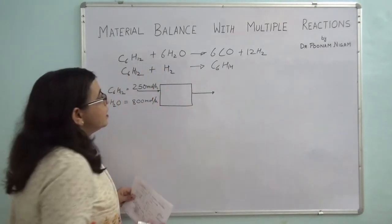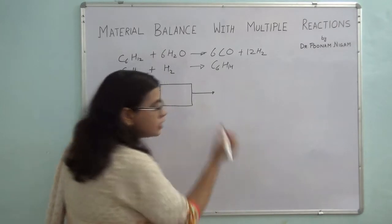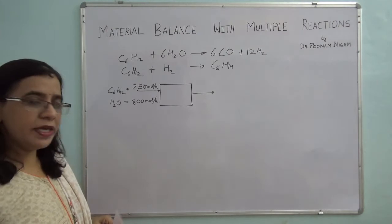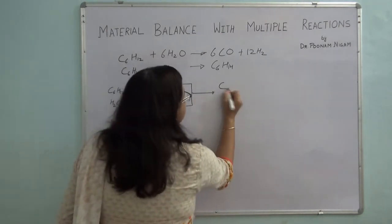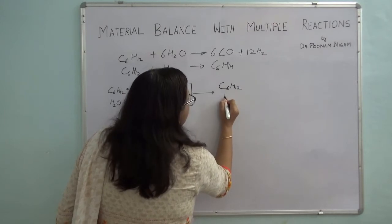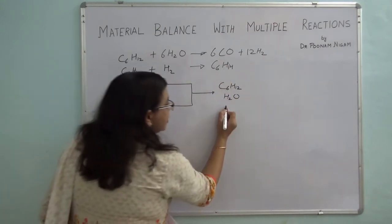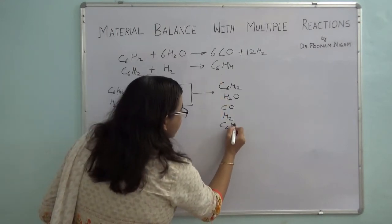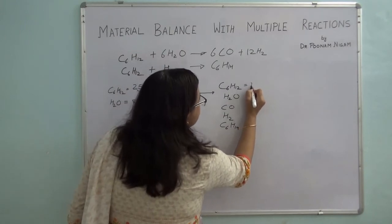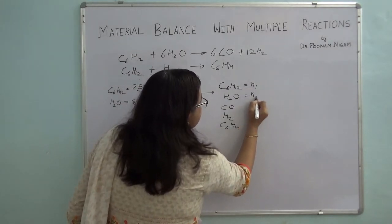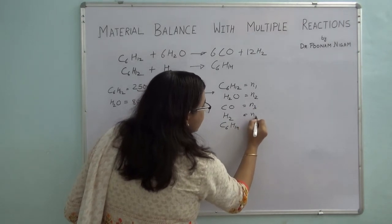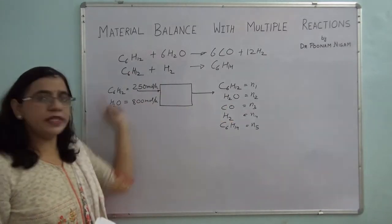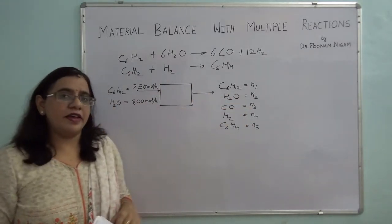We have to calculate the product composition. The products coming out include first the unreacted components, then products CO, H2, and C6H14. I will mark these as N1, N2, N3, N4, and N5. The basis is given. I have drawn a fully labeled flow chart with all unknowns listed. C6H12 is supplied at 250 moles per hour and water at 800 moles per hour.